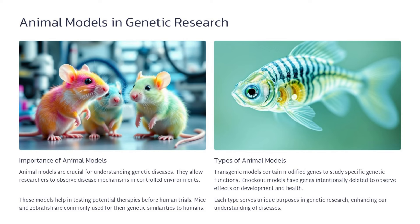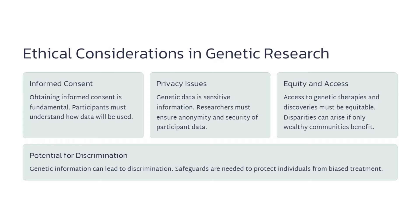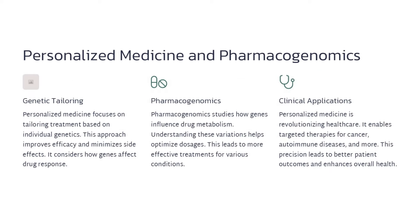Genetic research offers great potential, but also raises important ethical considerations. Informed consent is critical — participants must fully understand how their data will be used and agree to it. Genetic data is highly sensitive, so ensuring privacy, anonymity, and data security is paramount. We must strive for equity in access to genetic therapies and discoveries. Genetic information also has the potential to lead to discrimination, so robust safeguards are needed to protect individuals. As we advance genetic research, we have a responsibility to uphold ethical principles and protect the rights and well-being of research participants.